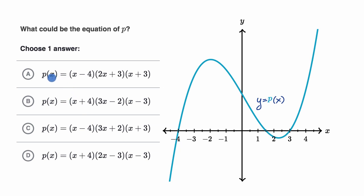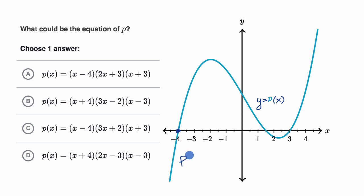You can see that all the choices have p of x in factored form, where it's very easy to identify the zeros — the x values that would make our polynomial equal to zero. We can look at this graph and see what the zeros are. This is where we intersect the x-axis, also known as the x-intercepts. So you can see when x is equal to negative four, we have a zero, because our polynomial is zero there. So we know p of negative four is equal to zero.